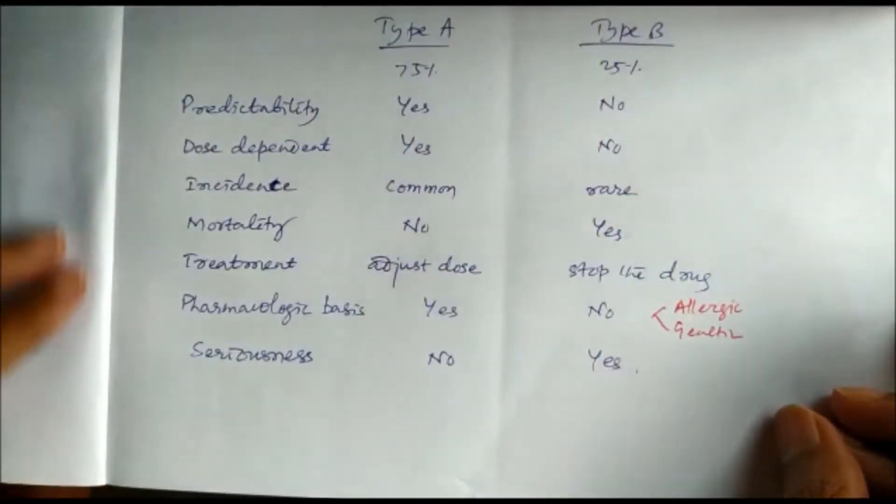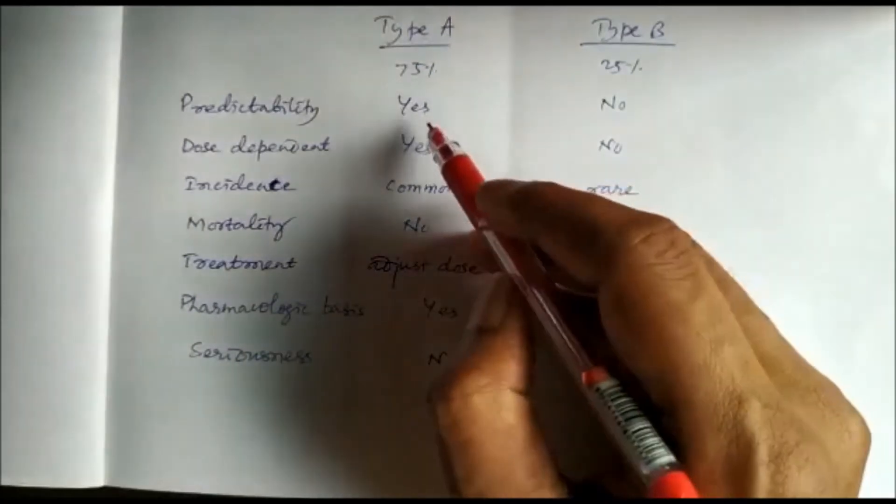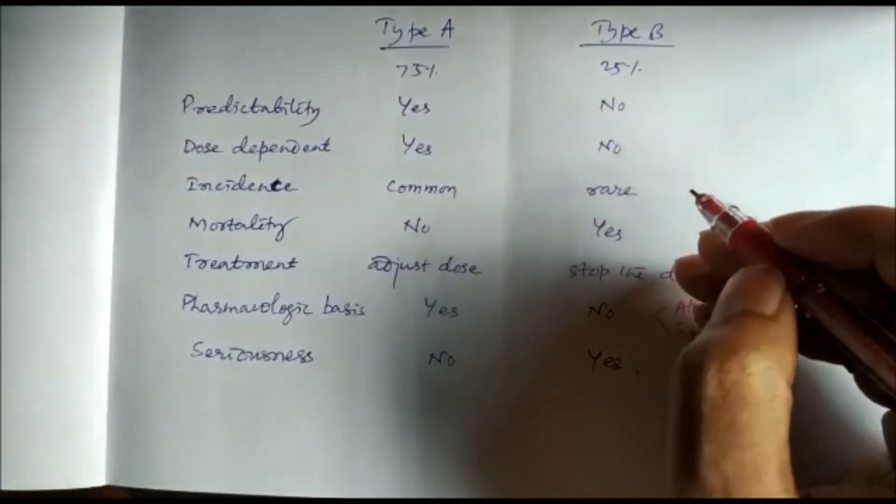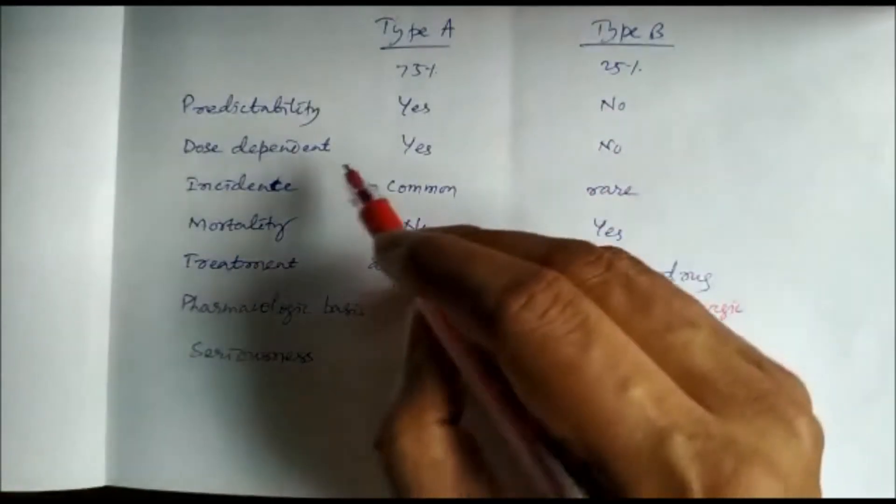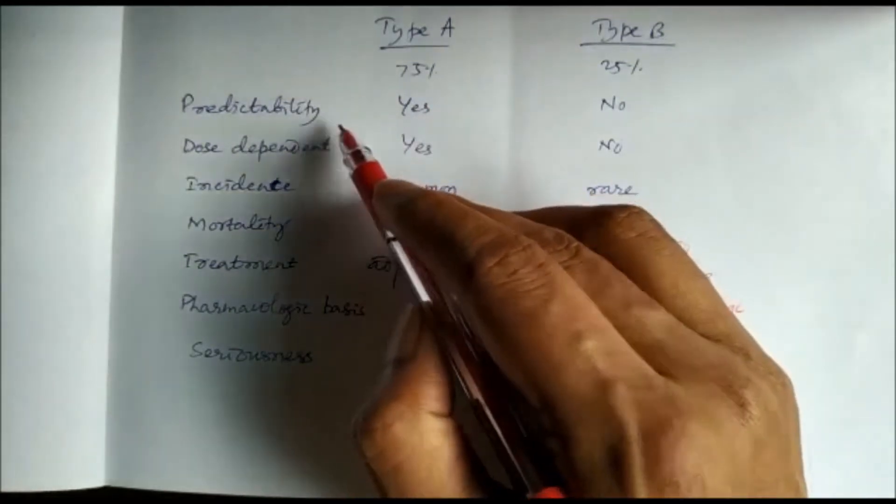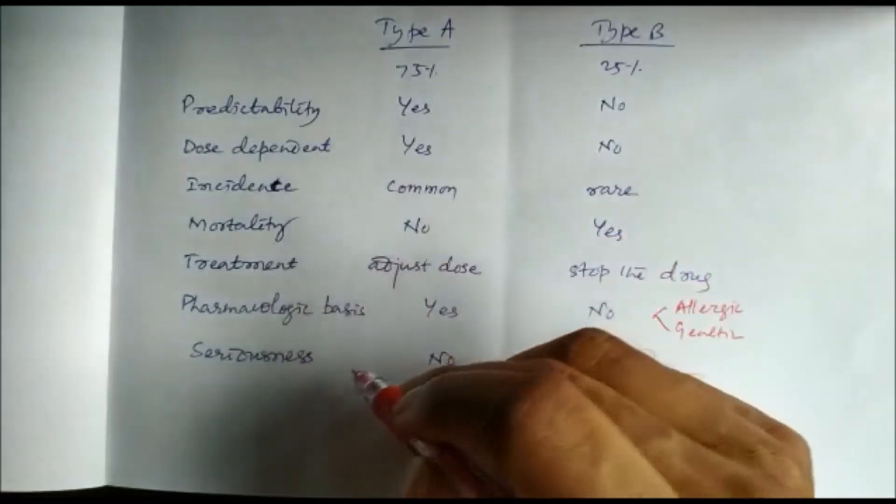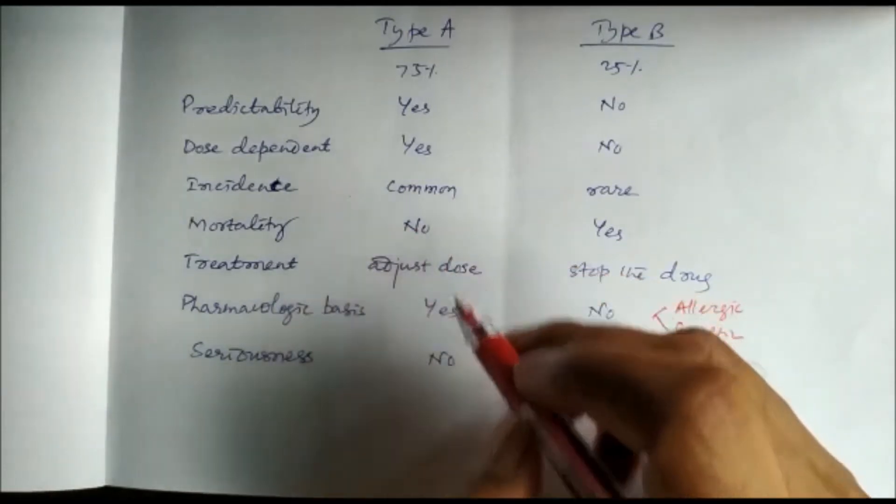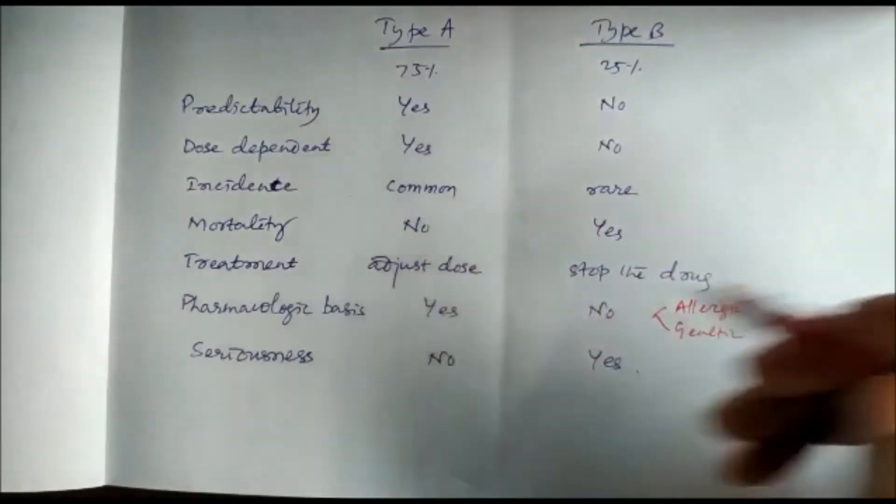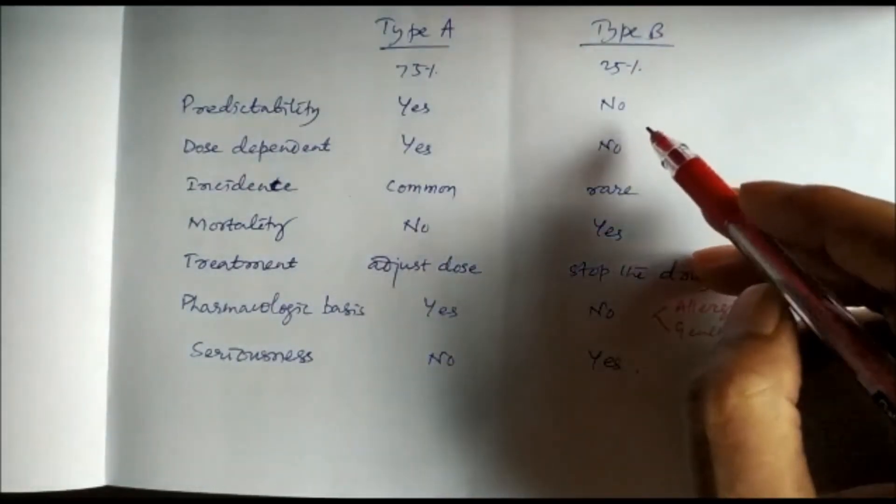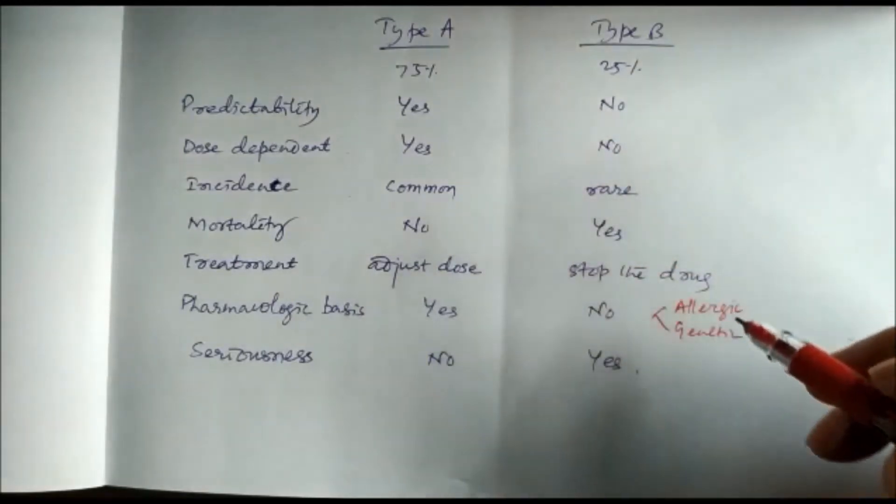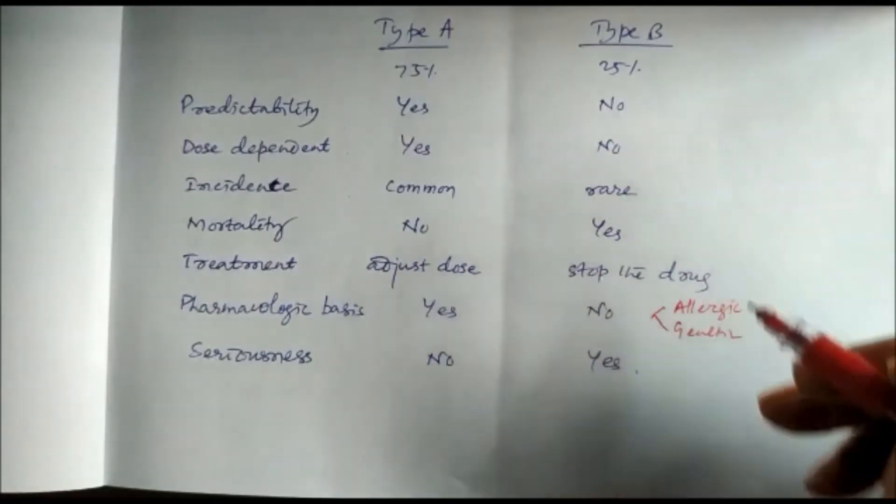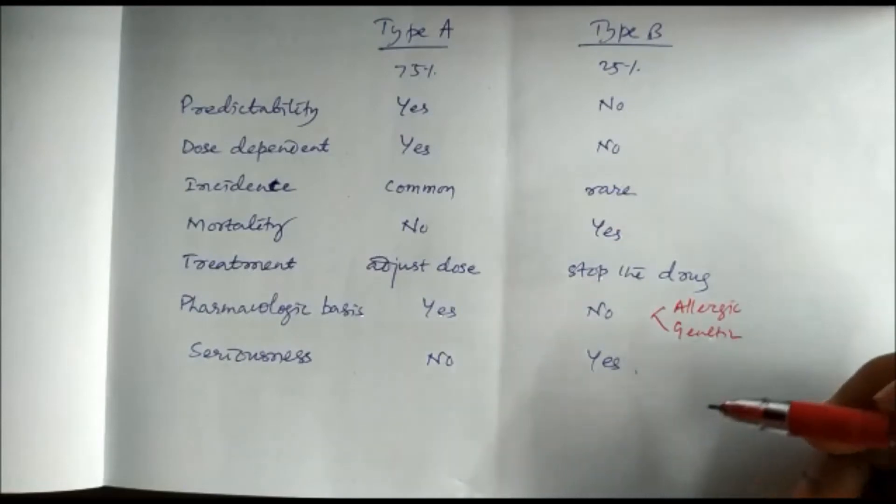If we see the difference between Type A and Type B, Type A adverse drug reactions are most common, almost 75 percent, whereas 25 percent are Type B and the rest are very few. Type A adverse drug reactions are predictable, dose-dependent, common, not that serious, have a pharmacological basis, and there is no mortality. We can treat them by adjusting the dose or lowering the dose. Whereas Type B adverse drug reactions are not predictable, they don't have any pharmacological basis, are not dose-dependent, they are rare but mortality is high, seriousness is high, very serious, and immediate management is required. They are mostly caused by allergies or genetic causes.